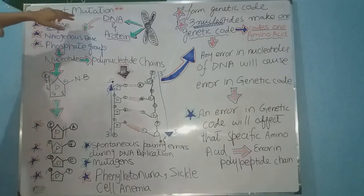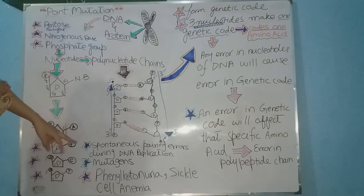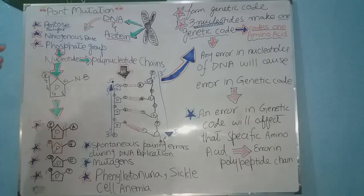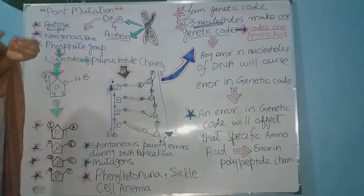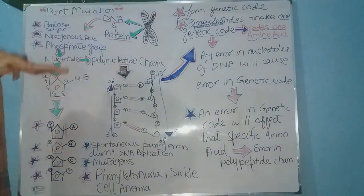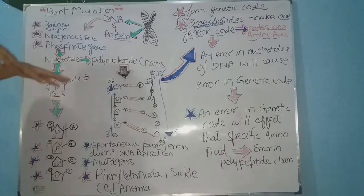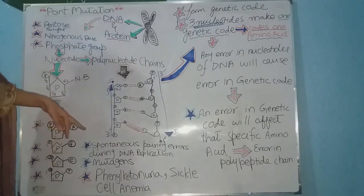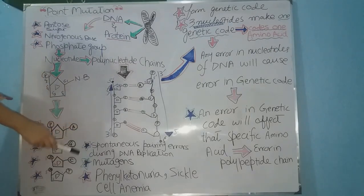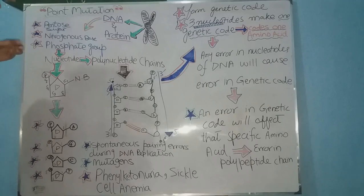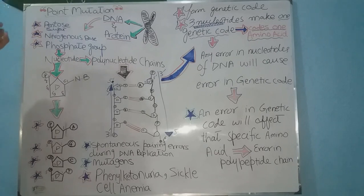The diseases caused by point mutation include phenylketonuria and sickle cell anemia. In phenylketonuria, enzymes are protein in nature and made up of amino acids. If a genetic code is not able to produce the proper amino acid required for the enzyme involved in the degradation of phenylalanine, phenylketonuria occurs. Phenylalanine, which should be degraded by that specific enzyme, starts depositing in the body and gets deposited in the brain, resulting in brain retardation.